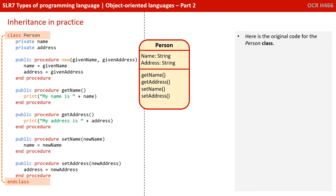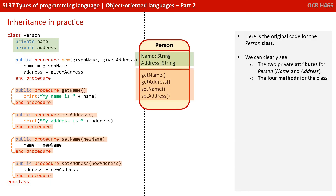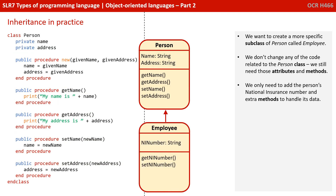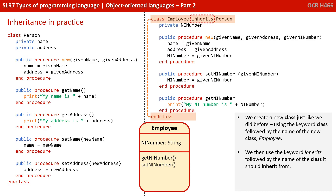Here is the original code for the person class shown on the left. We can clearly see the two private attributes for person name and address and the four methods for the class. We now want to create a more specific subclass of person called employee. Remember, we don't change any of the code related to the person class — we still need those attributes and methods. We only need to add the person's national insurance number and extra methods to handle this new data. We create a new class using the keyword class followed by the name of the new class, employee. We then use the keyword inherits followed by the name of the class it will be inheriting from — in this case, person.